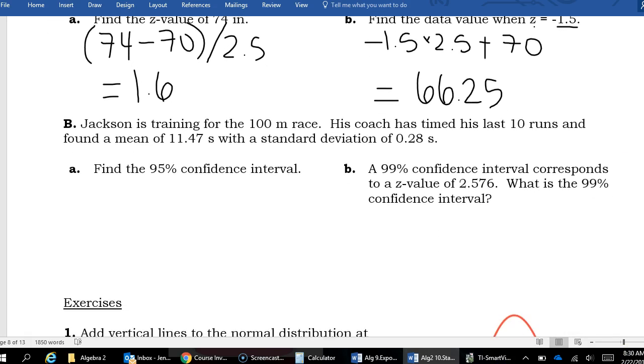Jackson is training for the hundred meter race. His coach has timed his last 10 runs and found a mean of 11.47 seconds with a standard deviation of 0.28 seconds. Find the 95% confidence interval. So I have my mean in here, I have my standard deviation in here, I have my number of practices in here. And because I'm looking for the 95% confidence interval, that means Z will be 2.